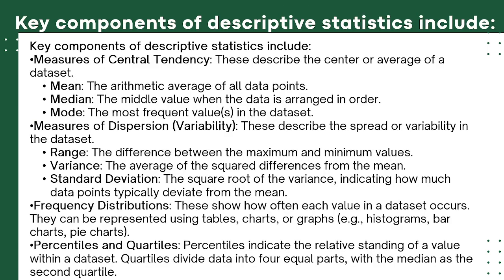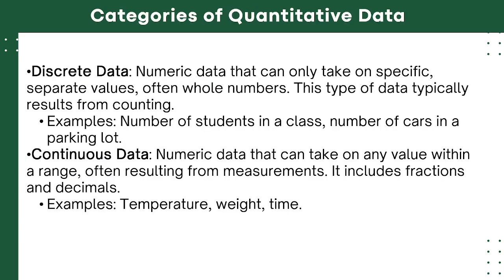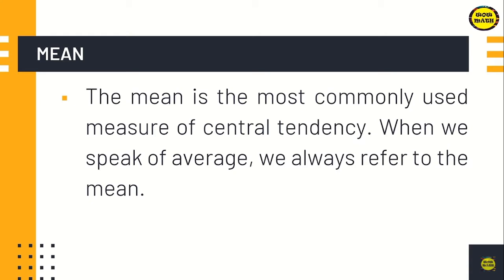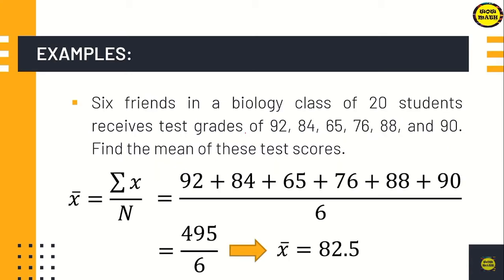In descriptive statistics, it involves the mean, median, mode, and variability — range, variance, standard deviation, and frequency distribution. Now let's talk about what is mean. The mean is the most commonly used measure of central tendency. When we speak of mean, that is average. The formula of mean is: the mean of n numbers is the sum of numbers divided by n, denoted by x-bar, so x̄ = Σx/n.